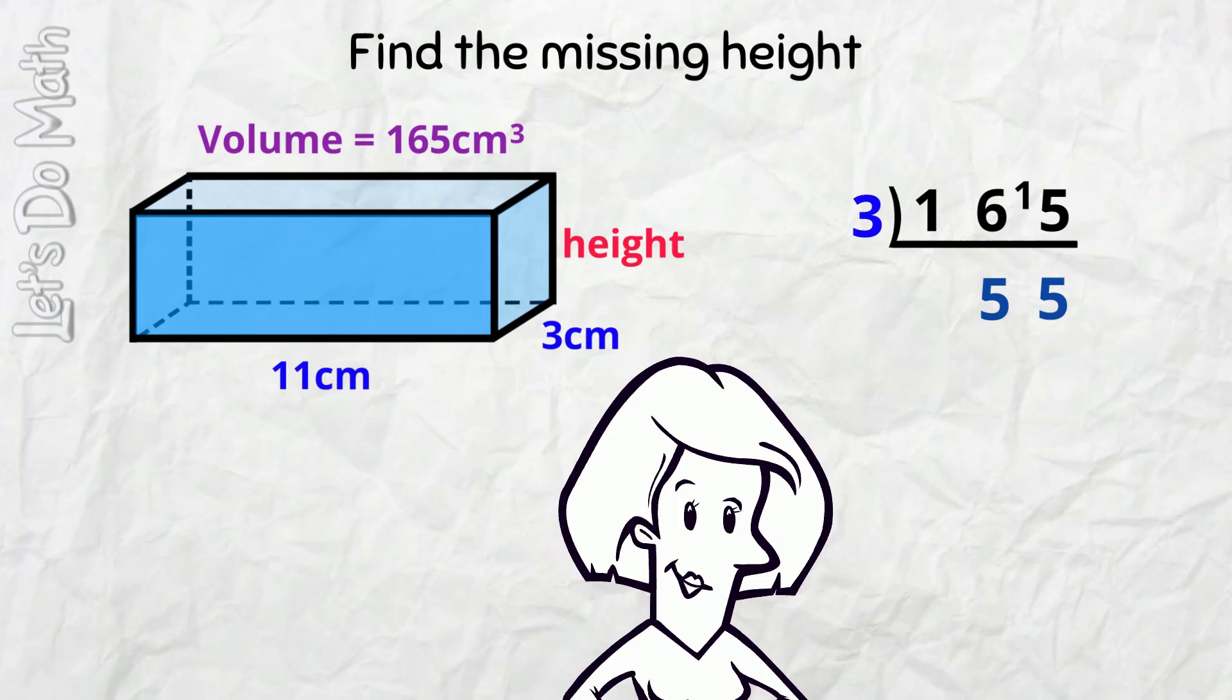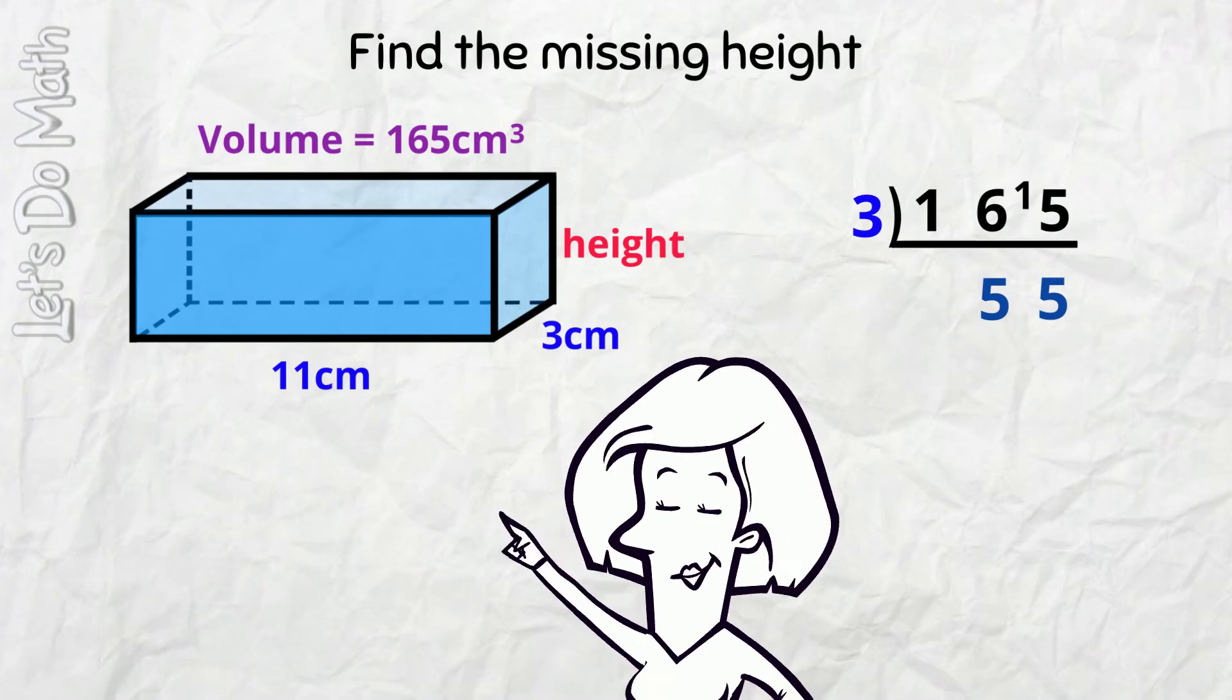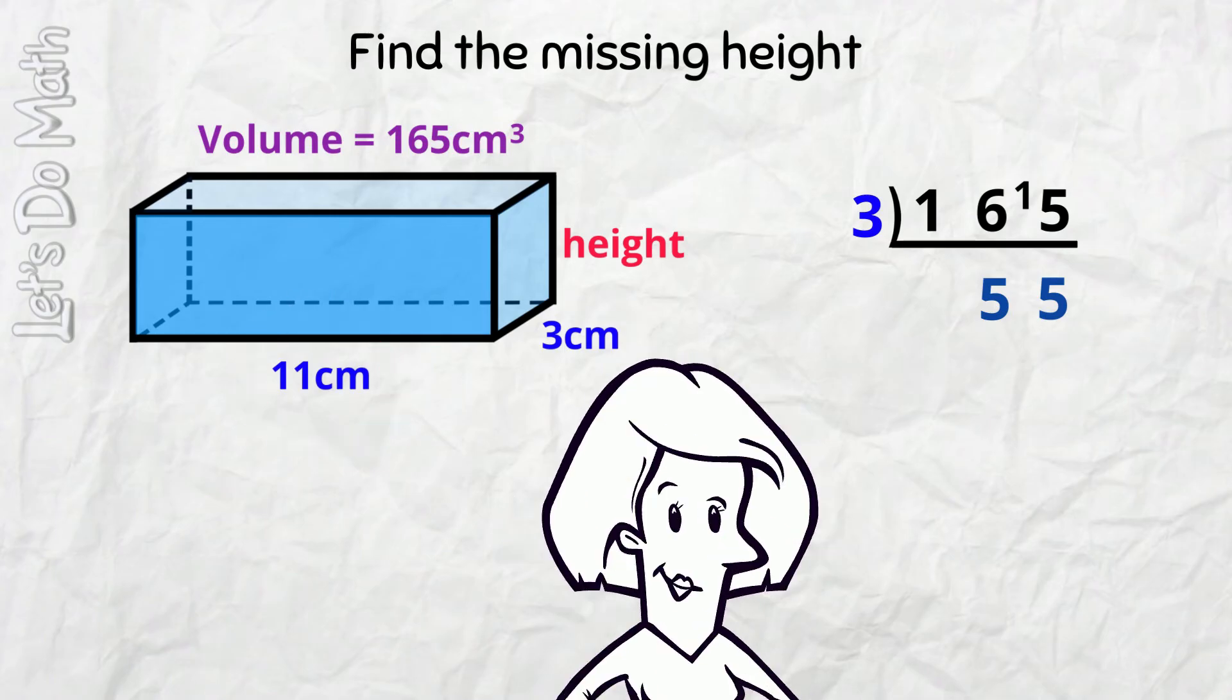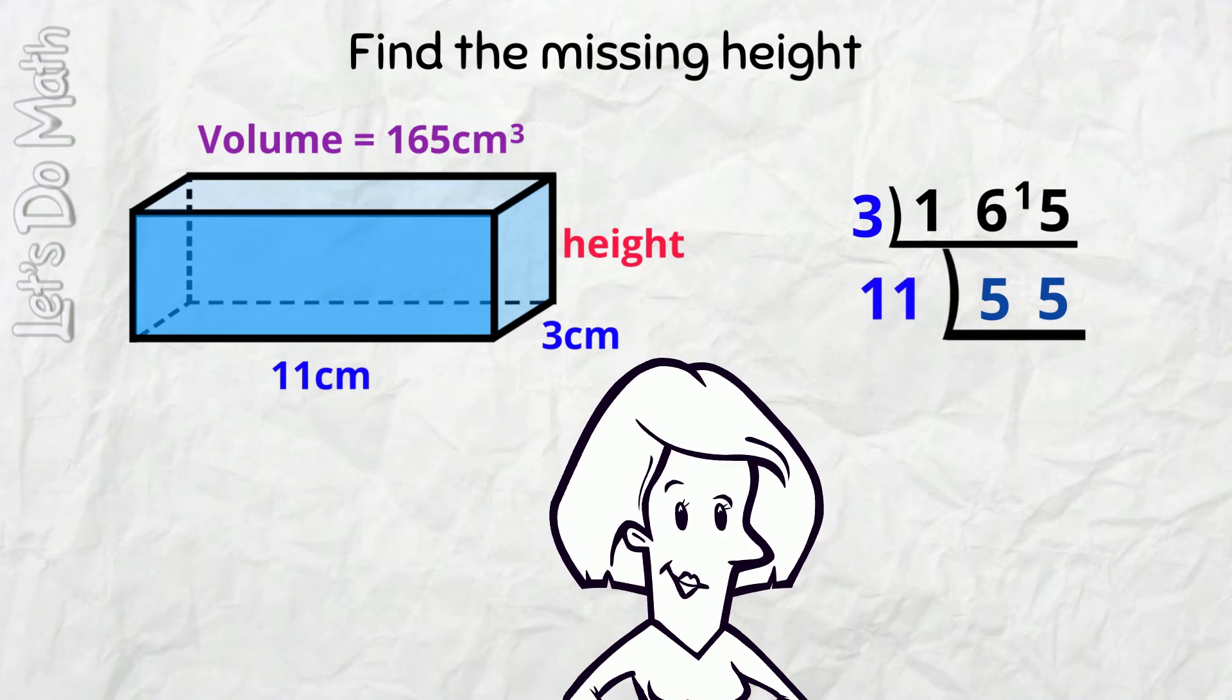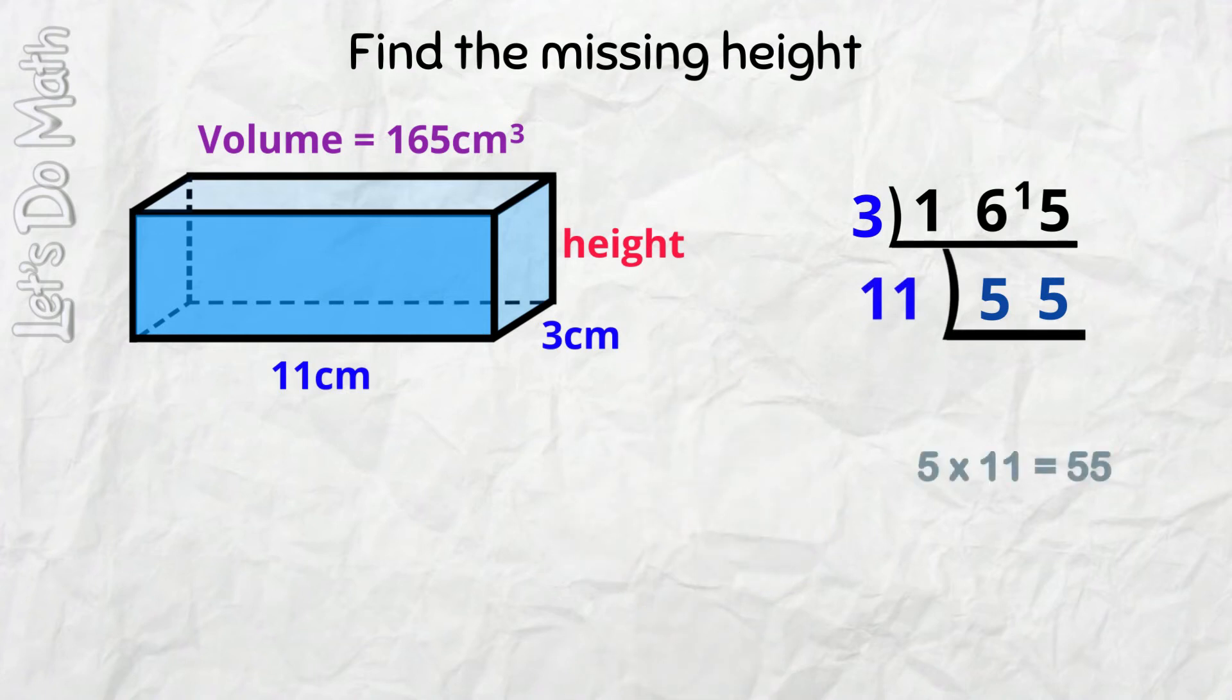Now, we divide by the OTHER dimension LENGTH 11. That will give us the missing side! We know that 5 11's are 55. So, the HEIGHT is 5cm!